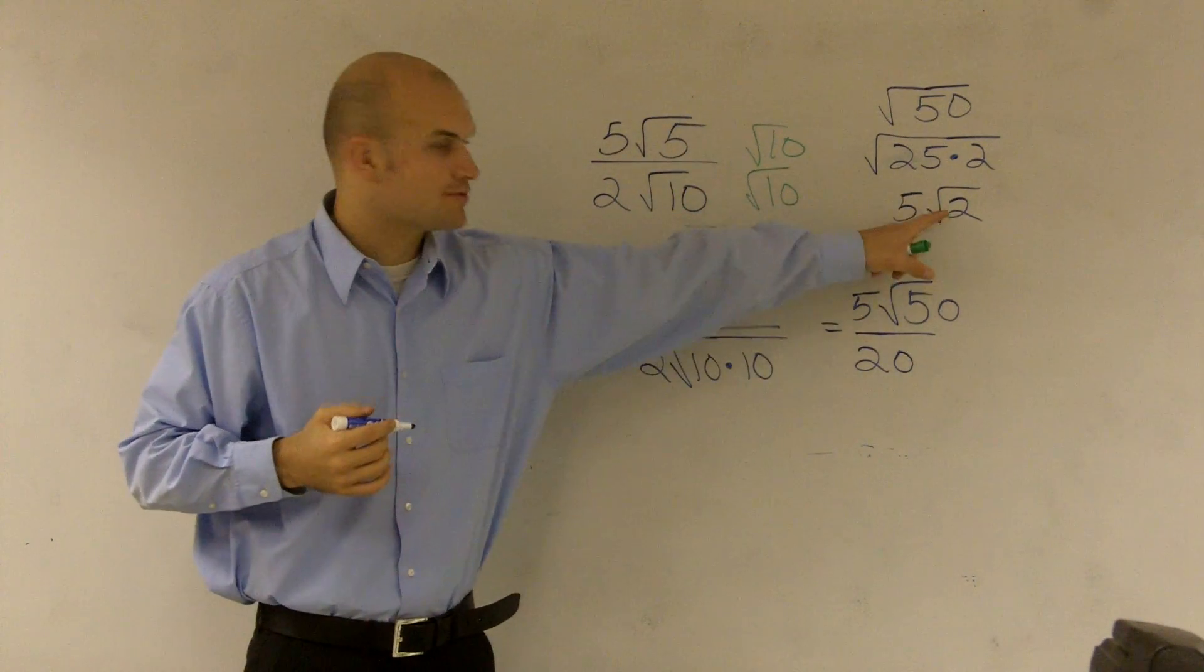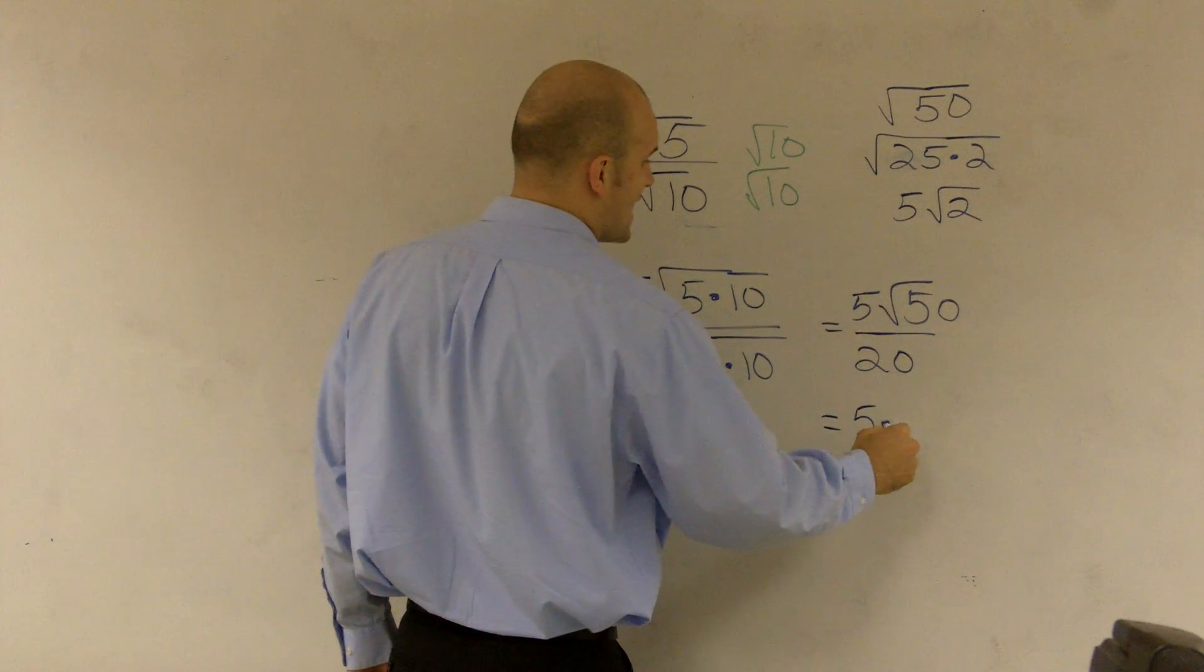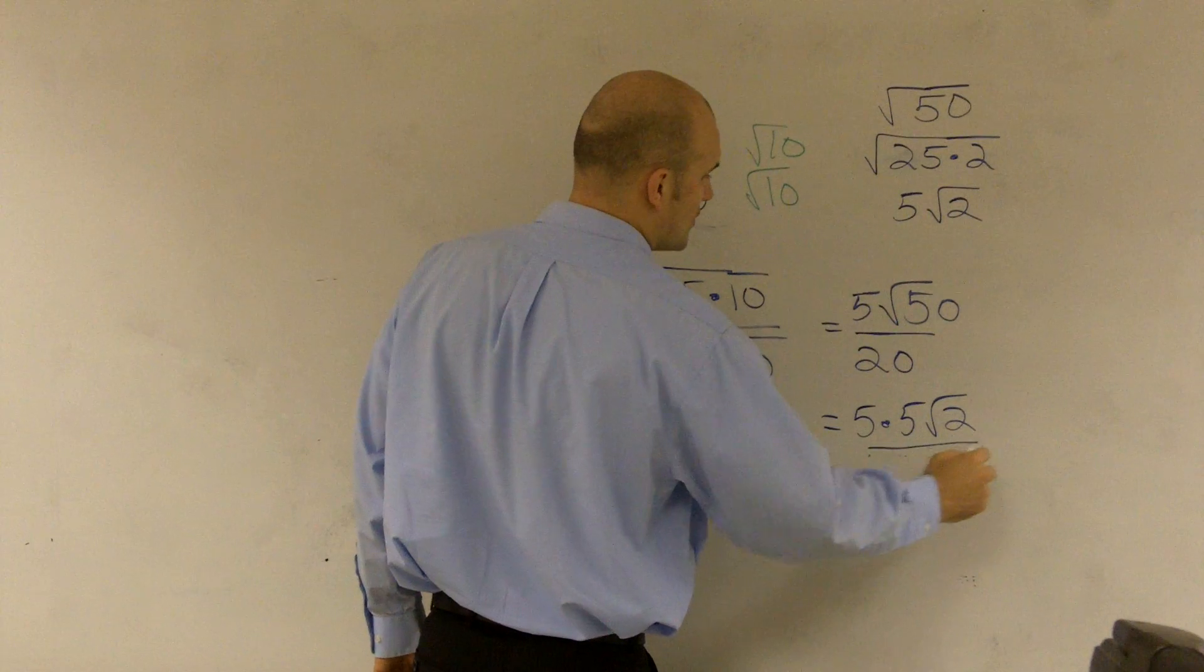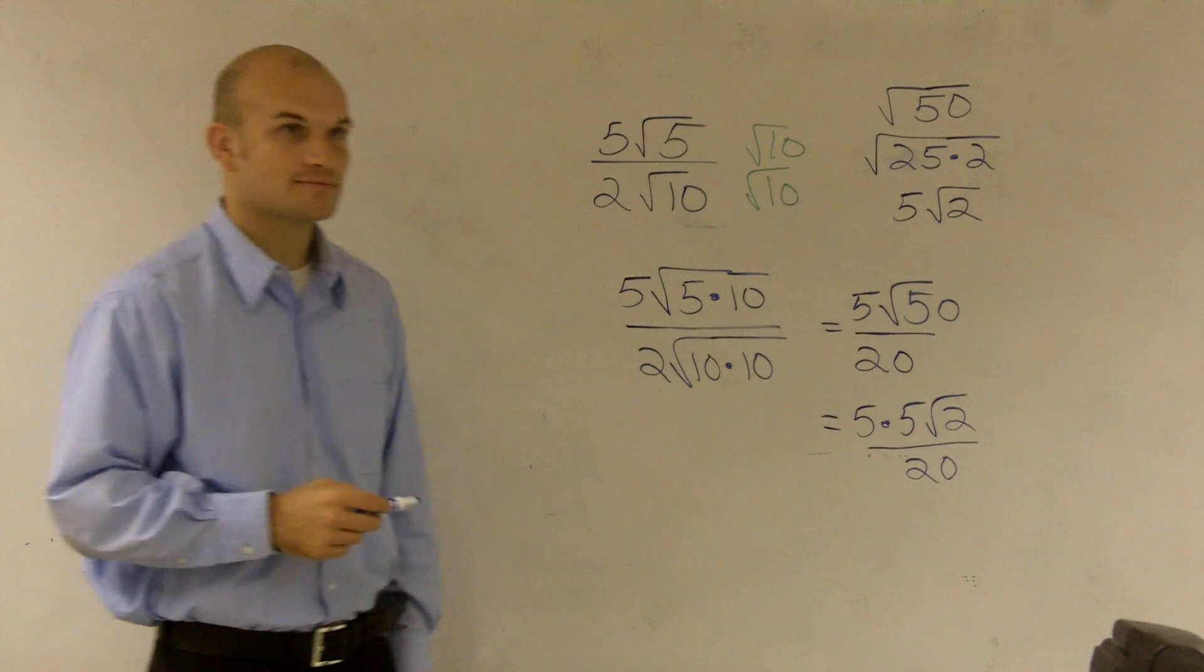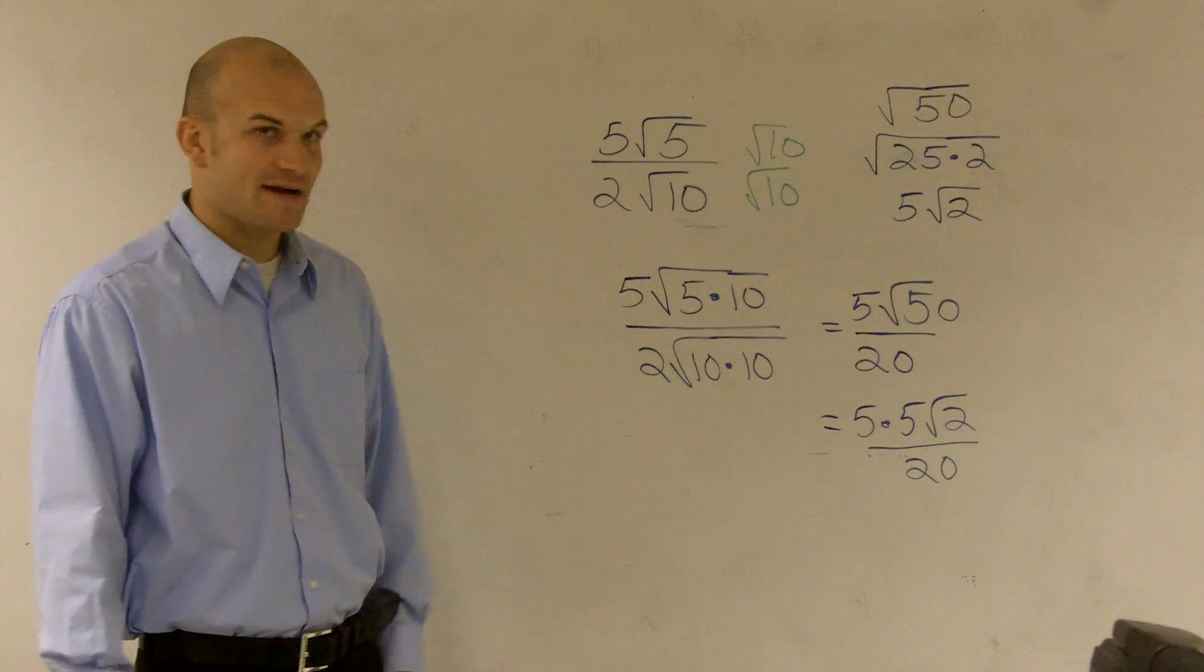So you have 5 times the square root of 2. So I'm going to rewrite that. So now what I have is 5 times 5 times the square root of 2 all over 20. And then I look at this and I say, well, obviously what can I factor out?